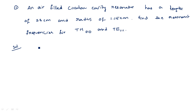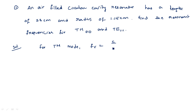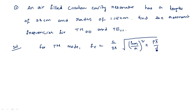Before calculating for TM010 and TE111, we should know the resonant frequency formula for TM mode. For TM mode, the resonant frequency f_R is equal to C divided by 2π times the square root of (P_nm / A)² + (pπ / D)².